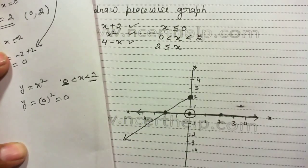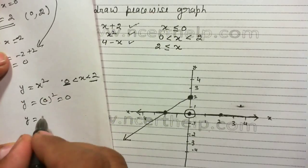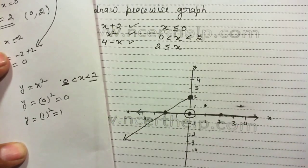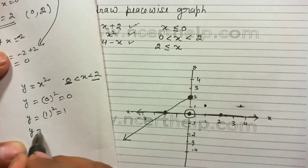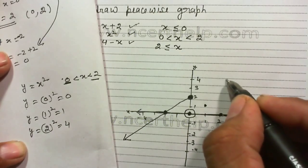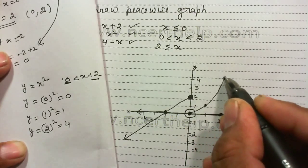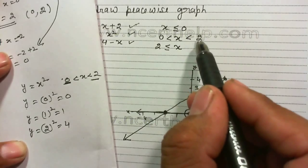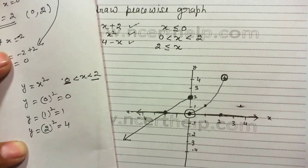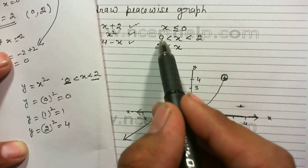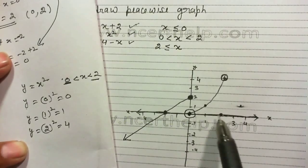Taking more points: when I put x equal to 1, the square of 1 gives me 1, so the point (1, 1) lies on the parabola. When I put x equal to 2, the square of 2 gives me 4, so the point (2, 4) is plotted. Since 2 is not included in the solution, I use a hollow circle at that end. This is the graph of the second part — a parabola drawn between x equals 0 and x equals 2.